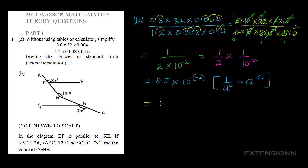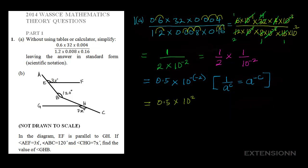So here we have 0.5 times — since it is minus times minus in the bracket — that gives us plus, so we have 10 raised to power 2. But we can't leave our final answer like this, because 0.5 is less than 1 and A must be between 1 and 10. So we move the decimal point one step forward to get 5 times 10 to the power minus 1, times 10 to the power 2.